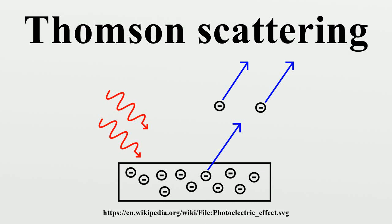Thomson scattering is the elastic scattering of electromagnetic radiation by a free-charged particle, as described by classical electromagnetism. It is just the low energy limit of Compton scattering. The particle kinetic energy and photon frequency are the same before and after the scattering.